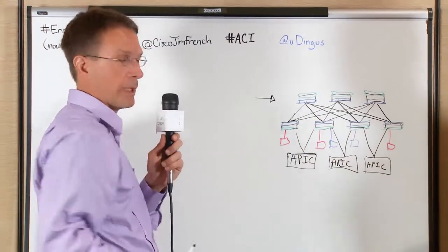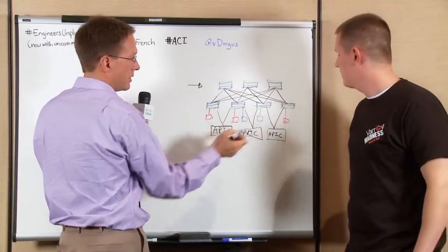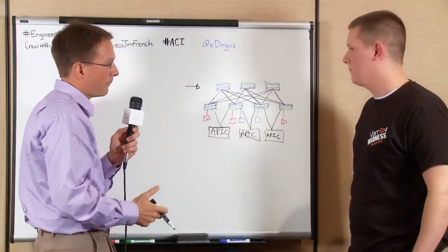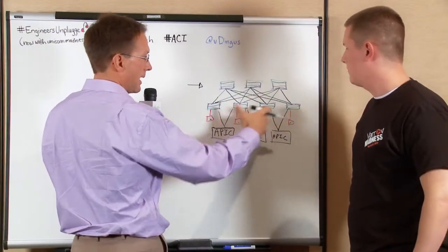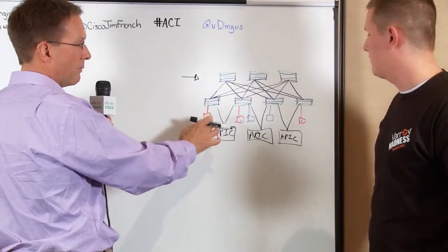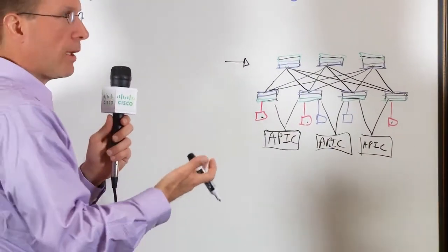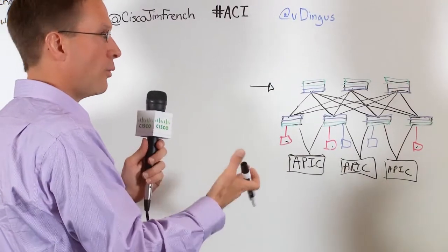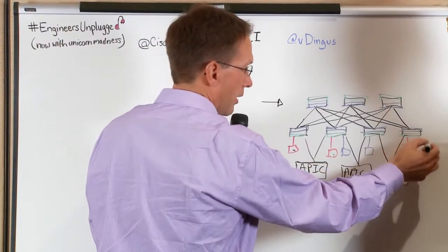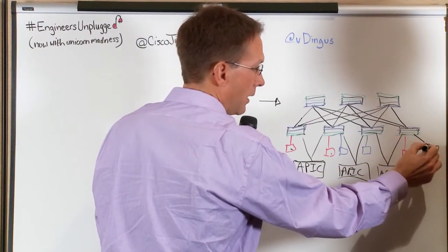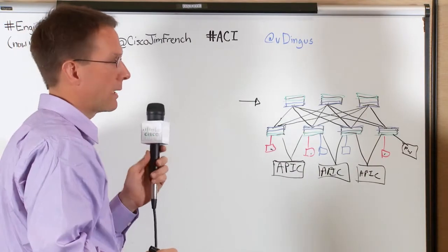That's just the basics of the fabric, and then it's all about deploying applications. If I wanted to provision something like the red application you see here, I can send a document into my controller. It provisions that entire application — it could be web tier, app tier, database tier. The fabric itself becomes the firewall; I no longer have to have a separate firewall. Or if I still want traditional firewalls, I can plug them anywhere in the fabric, and this firewall can be used for the red application or the blue application.